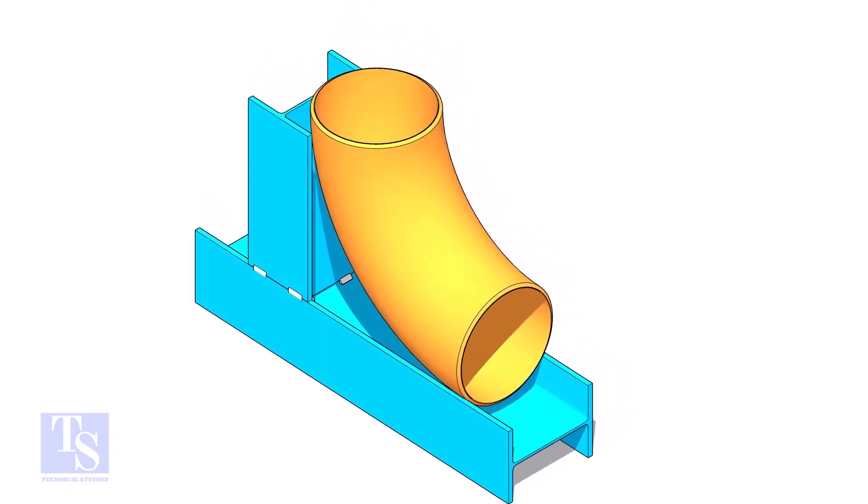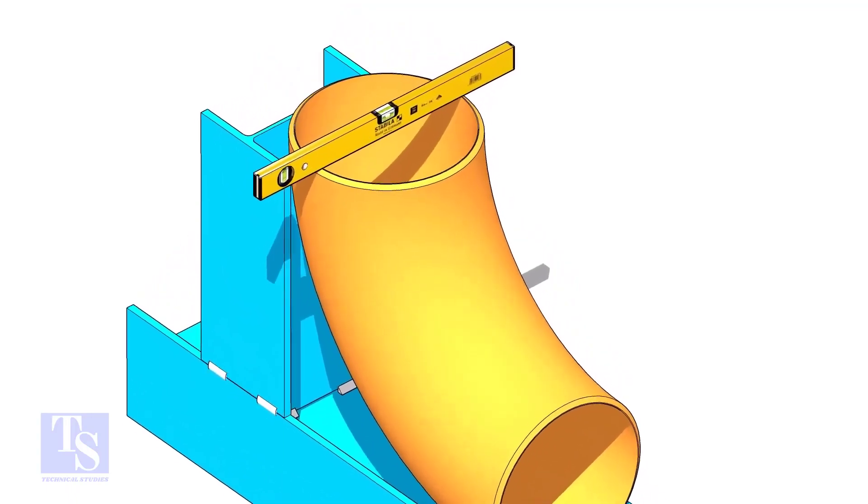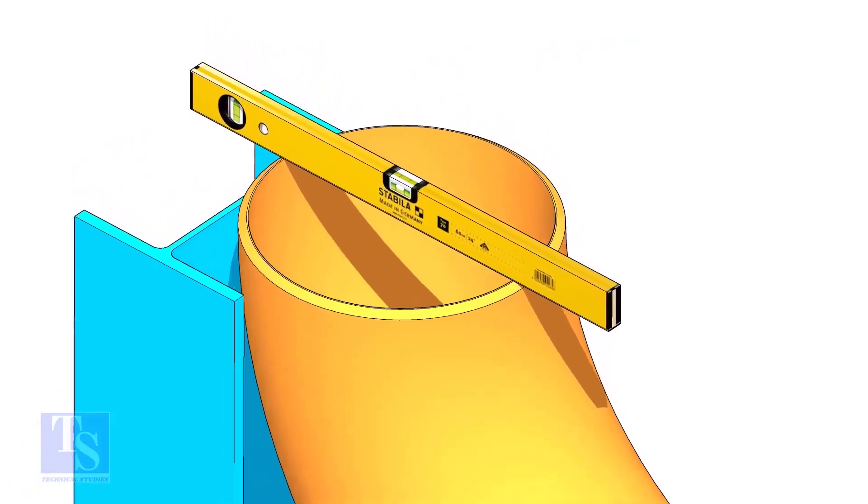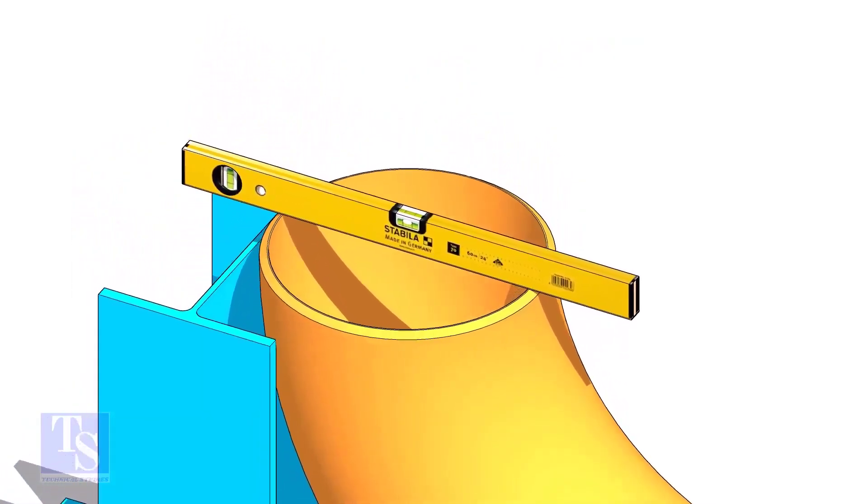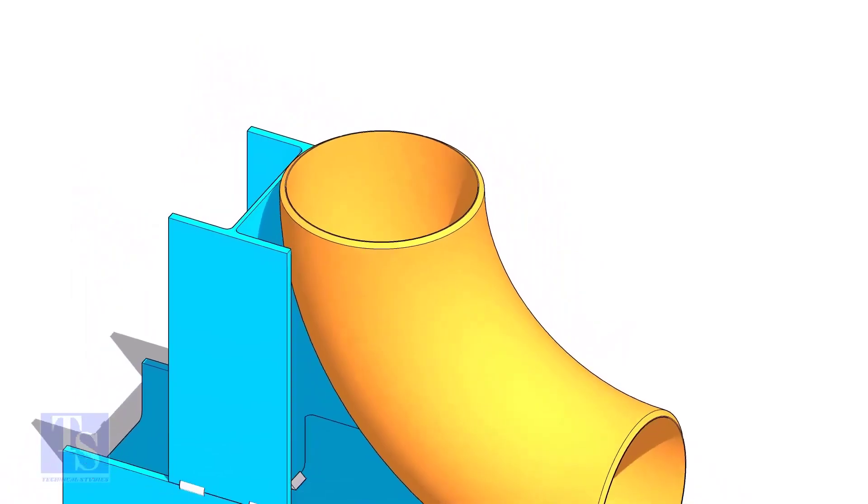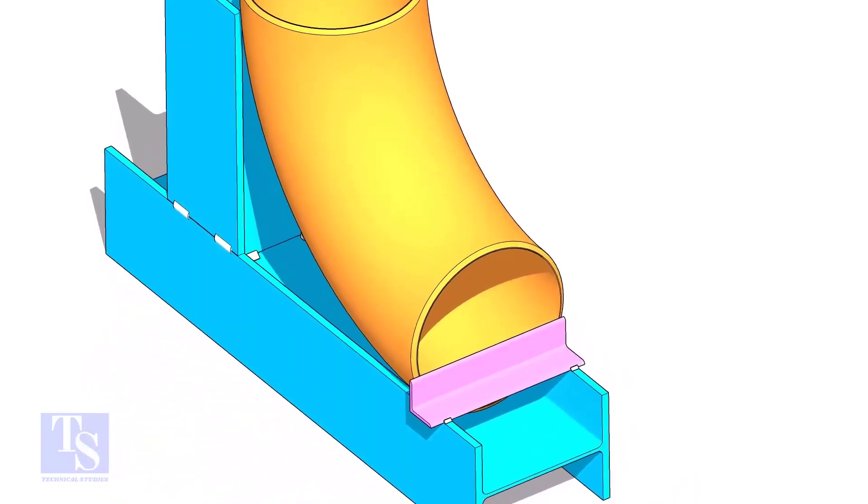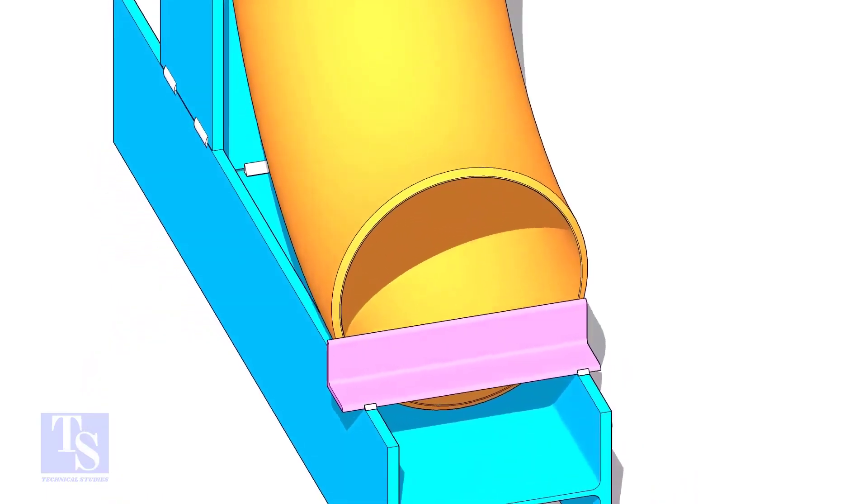Put the elbow in the jig. Level the top face of the elbow on both ways. Tack weld a piece of angle bar or a piece of plate at the bottom side of the jig to arrest the elbow.